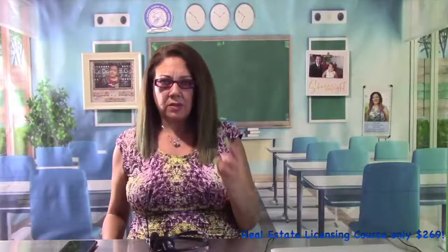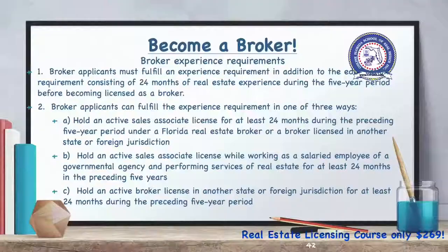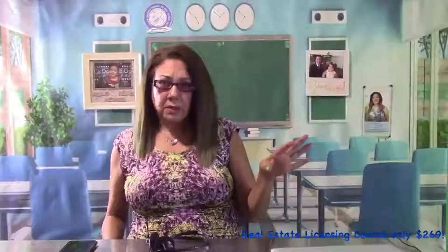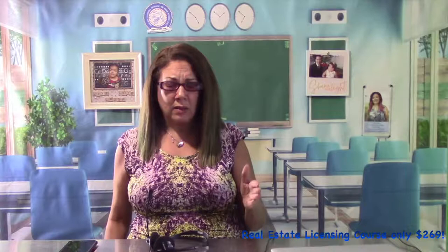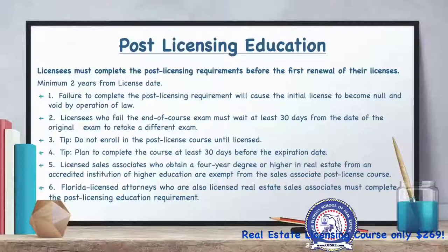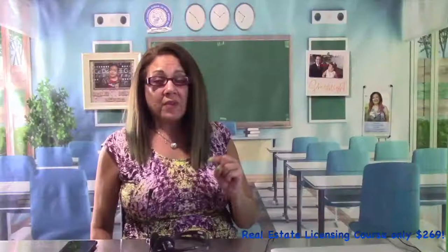Experience can also be completed by holding an active sales associate license while working as a salaried employee for a government agency performing real estate duties. Note that working under an owner developer or builder will not satisfy the experience requirement unless the owner developer also holds an active broker license. Once brokers get their license, they must complete a 60-hour post-licensing course before their first renewal, which is due within two years.